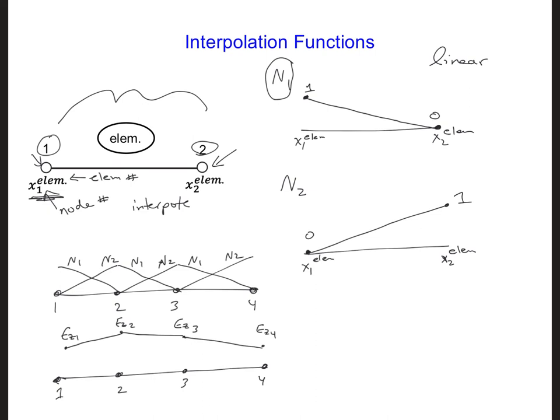So using these two interpolation functions, now spend a minute and write an expression for EZ within just one element of our grid. Use the two interpolation functions, N1 and N2, that we developed for that element, as well as the value of EZ at the two nodes of the element.